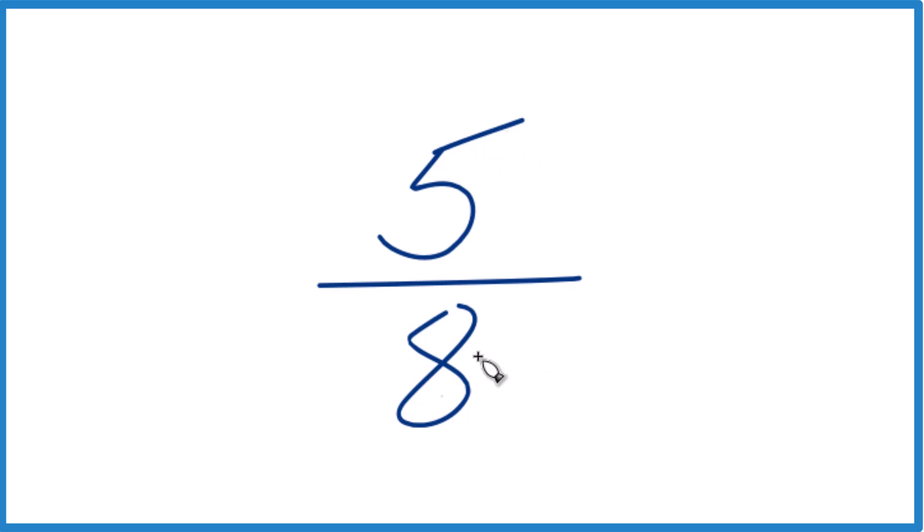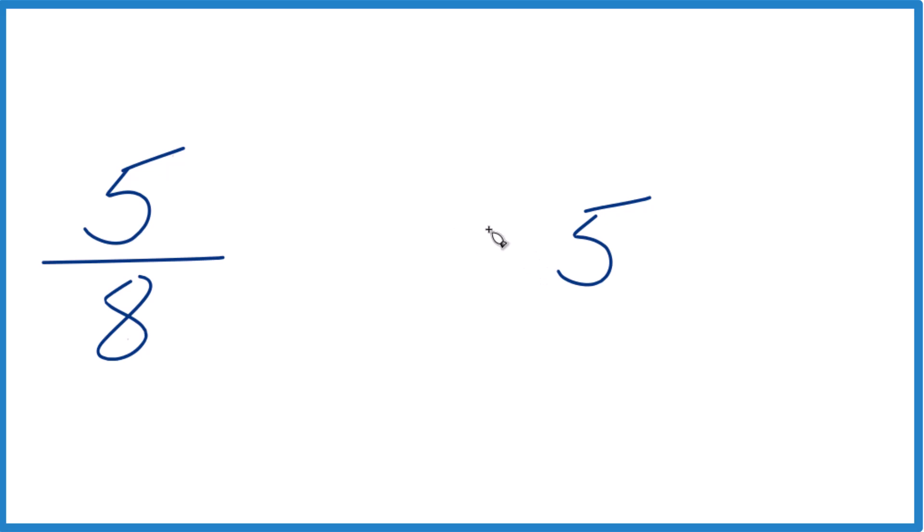So 5 eighths, we have 5 divided by 8. So we write 5 here, and we'll divide that by 8. 8 doesn't go into 5. So let's put a 0 here with a decimal point, and then call it 50.